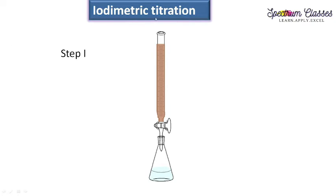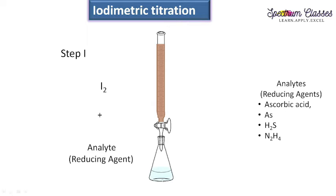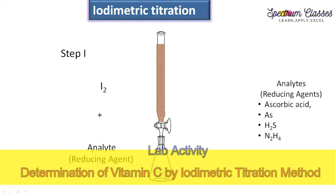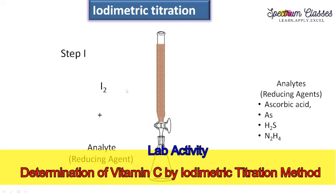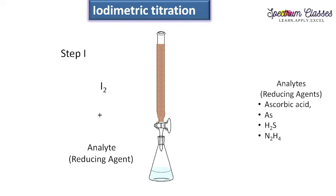In iodimetric titration, we fill our burette with iodine solution and directly take our analyte, which is a reducing agent. It oxidizes the iodine and turns its color from dark brown to colorless, and in this manner you can determine the endpoint. Only one reaction is involved. It is a direct method — iodine is the titrant and the reducing agent is the analyte. Whereas in the previous case, the analyte is an oxidizing agent that first reacts to produce iodine, which then reacts with sodium thiosulfate in the indirect method.